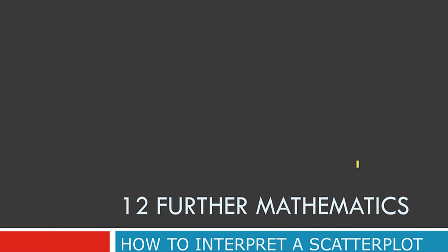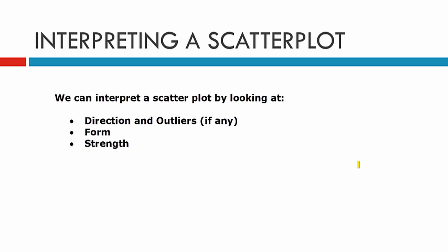We're going to be looking at how to interpret a scatterplot. When we interpret a scatterplot, we look at direction and outliers — if there are any — and this is done visually. Then we look at the form and the strength of it as well.